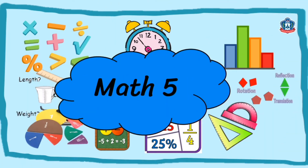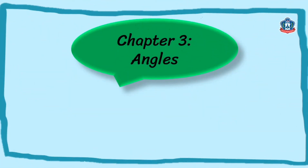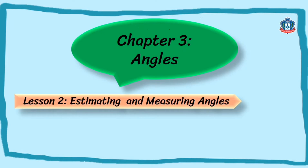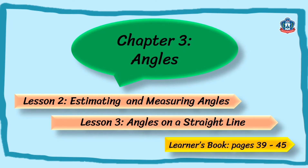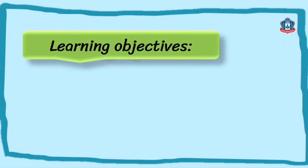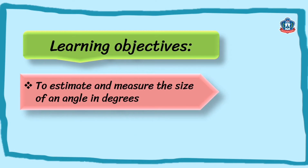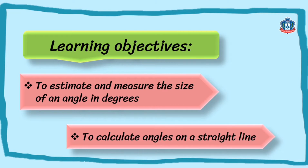Hello P5, it's Ms. Claire again and welcome to our Math 5 class. In this video, we will continue the lessons for Chapter 3 about Angles. You will learn about estimating and measuring angles, and also angles on a straight line. You can find this lesson in your learner's book, pages 39 until 45. Here are the learning objectives: to estimate and measure the size of an angle in degrees, and to calculate angles on a straight line. Are you ready P5? Relax, enjoy, and have fun learning this lesson.